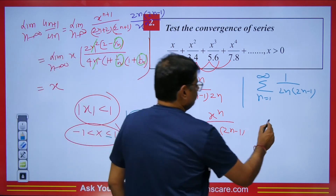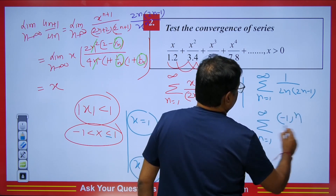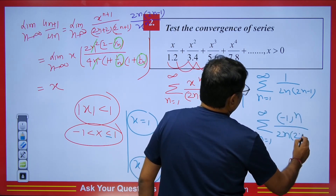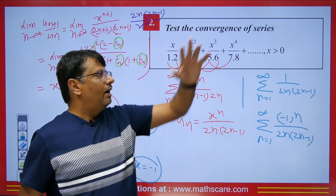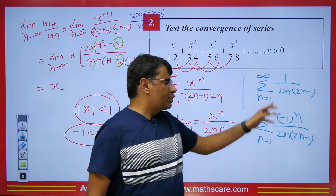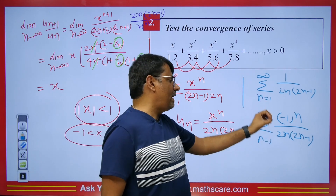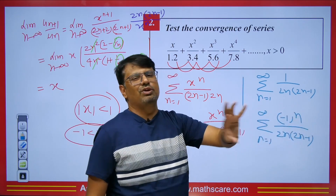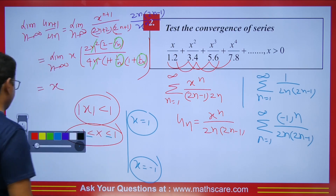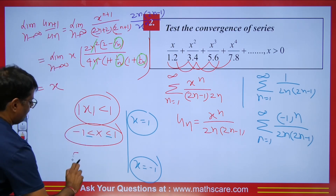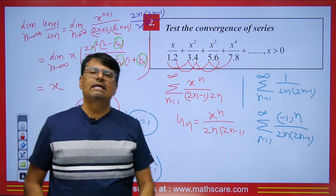At x = -1, the series becomes summation (-1)^n / (2n(2n-1)), which is a decreasing alternating series. It meets the Leibniz test because the term tends to 0 as n → ∞. So the series is convergent at x = -1 as well. Therefore the series converges on the closed interval [-1, 1].